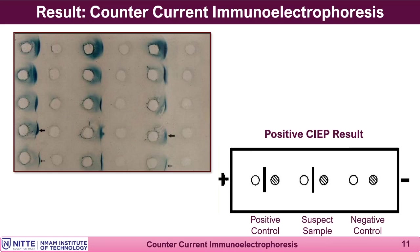Using counter current immunoelectrophoresis, one can get the results of an antigen-antibody reaction very fast — within one hour. In contrast, earlier techniques such as the Ouchterlony technique or single radial immunodiffusion require overnight incubation to show whether the antigen-antibody reaction has taken place. With electrophoresis apparatus available, one can demonstrate the reaction between soluble antigen and antibody very quickly by precipitin reaction.